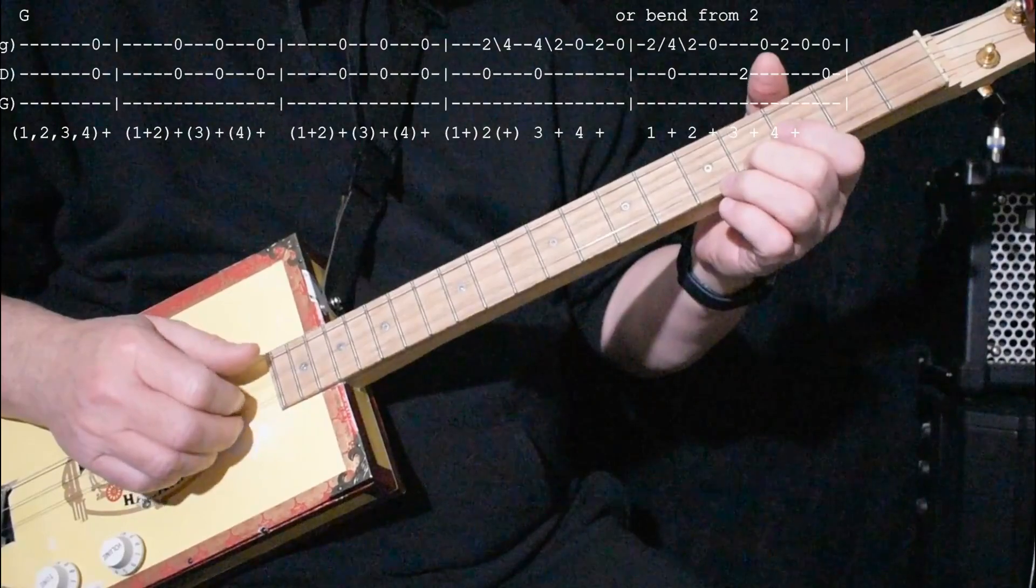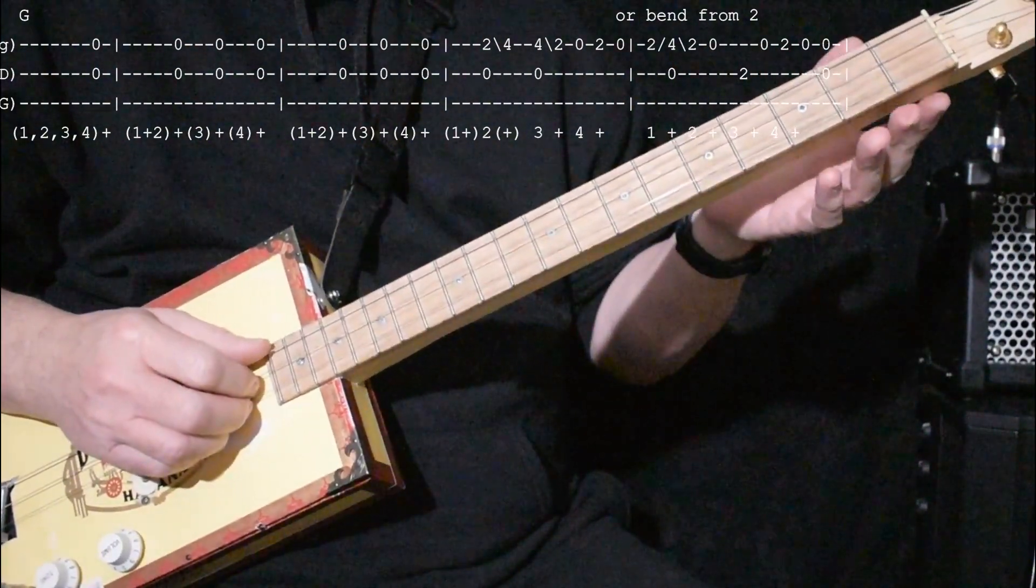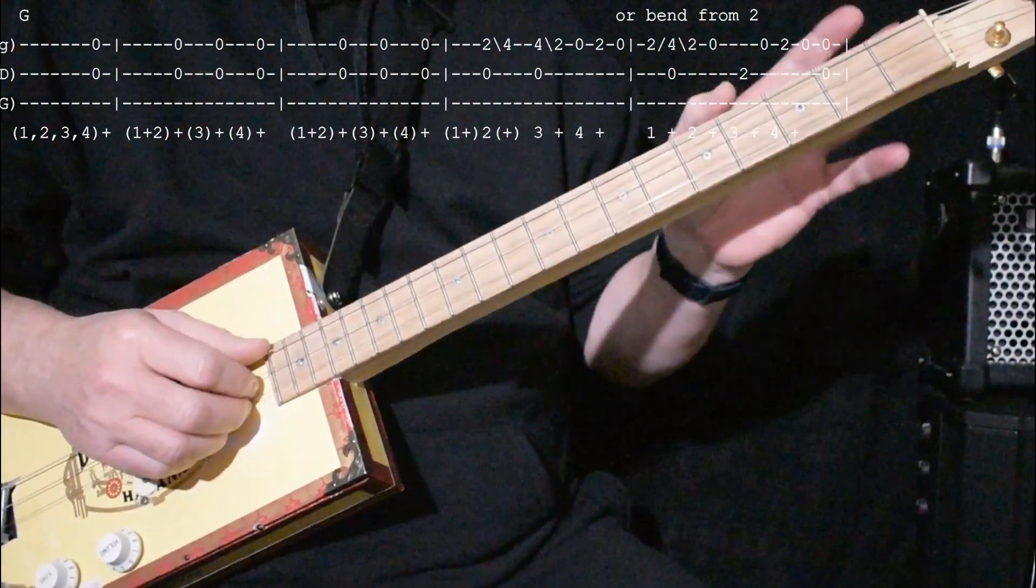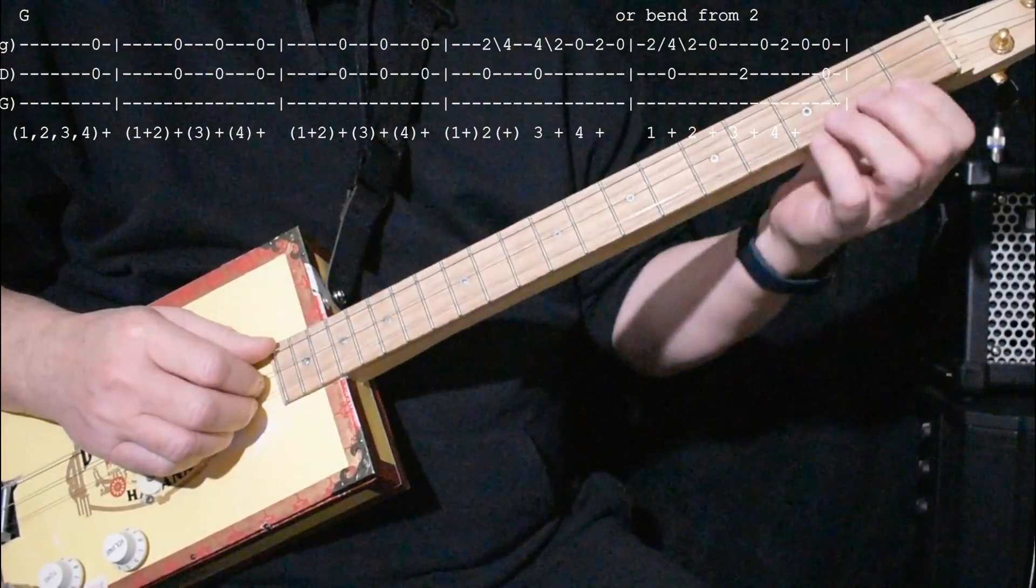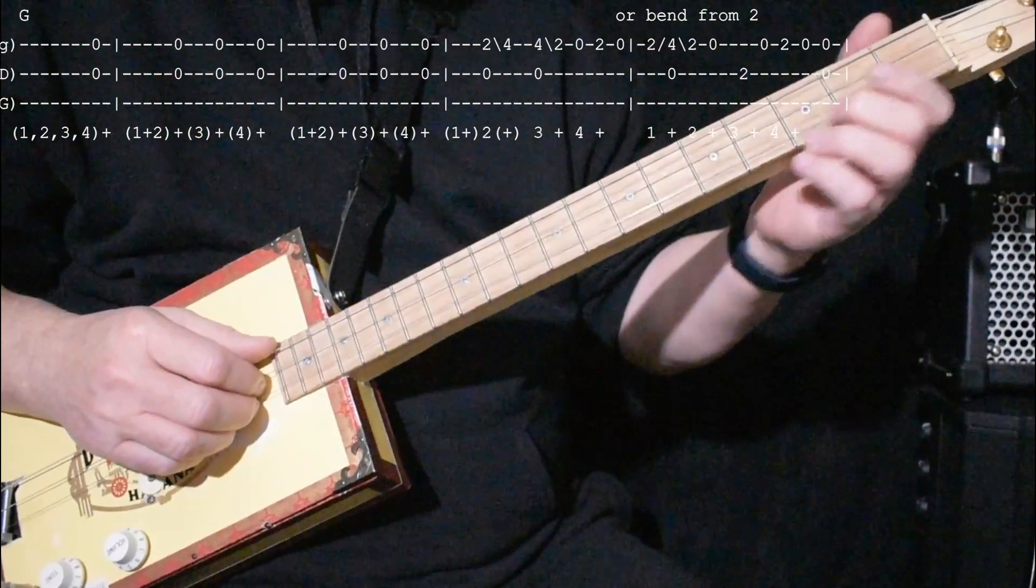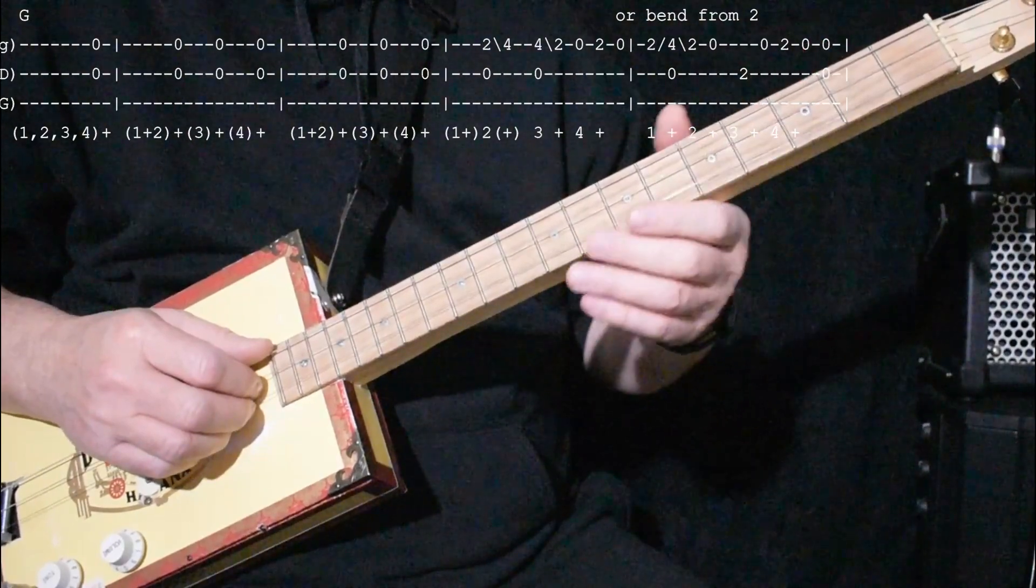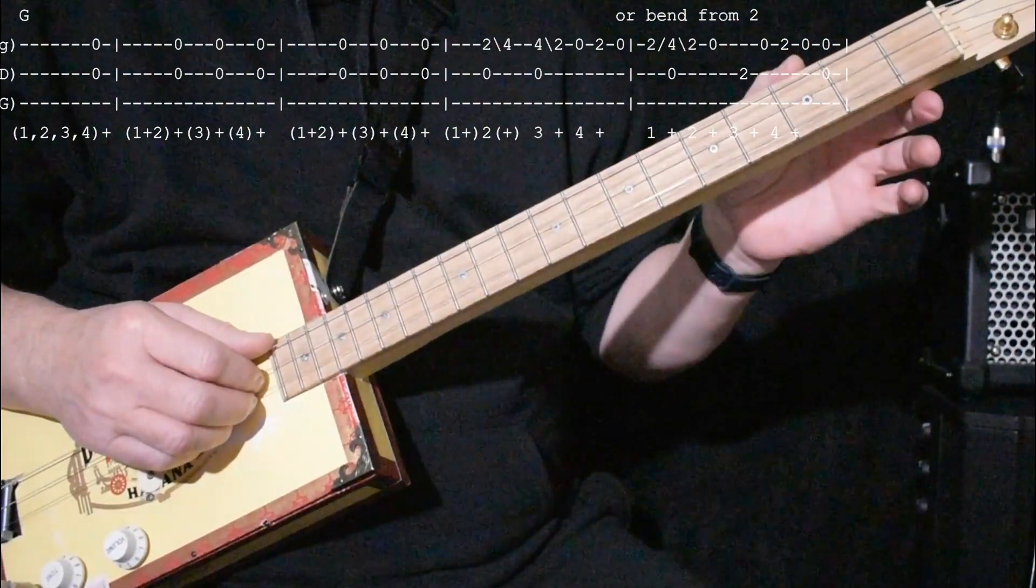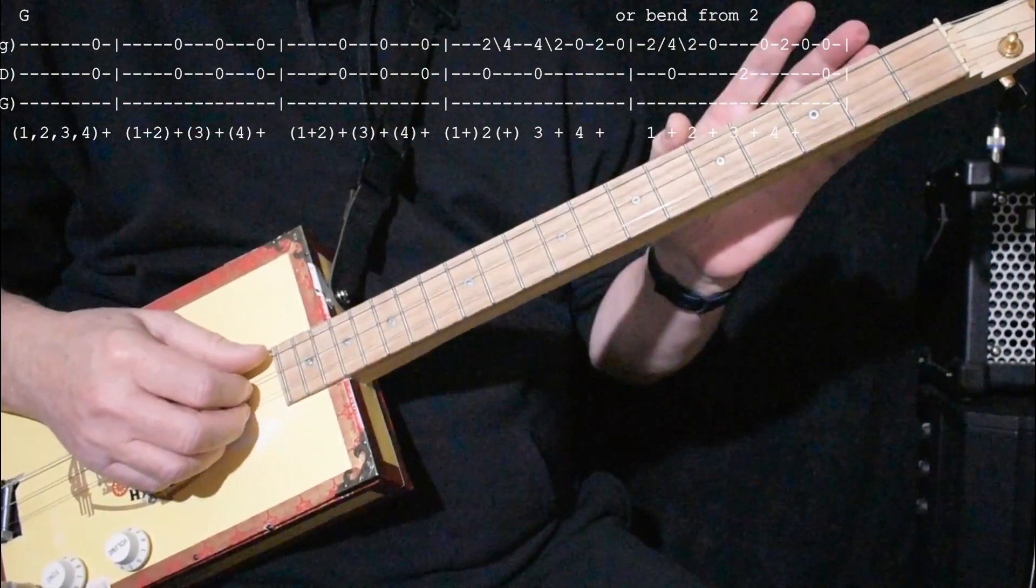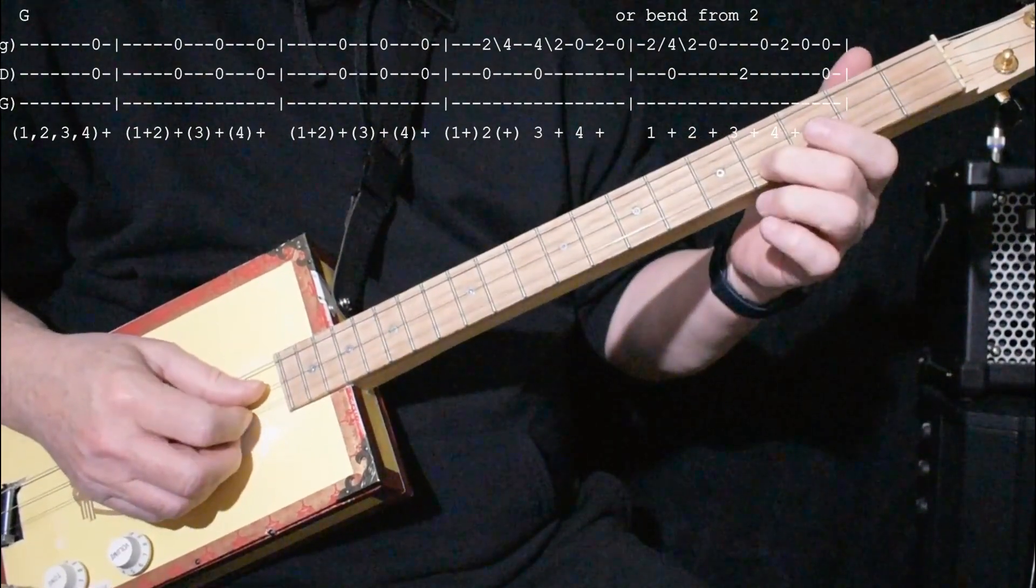And I do the lick like this. I'm not doing any bending. Actually, when I listen to it closely, I think he is only actually bending in one spot. But it's hard to say. But I'm not doing any bending because I've got really heavy strings on here. So you can choose to bend from any time it slides from the two to the four. You can do that as a bend, but I'm going to play it just as a slide right now. And I'm not going to do the extra note. I have it in the tab, but for the sake of clarity, I'm just going to play the lick. So slide from two to four,